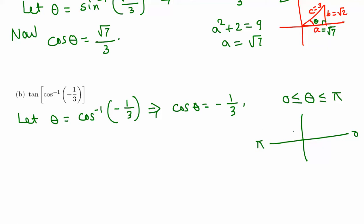Since cosine is negative, theta is in the second quadrant. Cosine is adjacent over hypotenuse, so drawing a right triangle: the adjacent side is negative 1 (going left from origin), so we assign negative 1 to side A, and the hypotenuse C is 3. The opposite side B points upward, so it is positive.